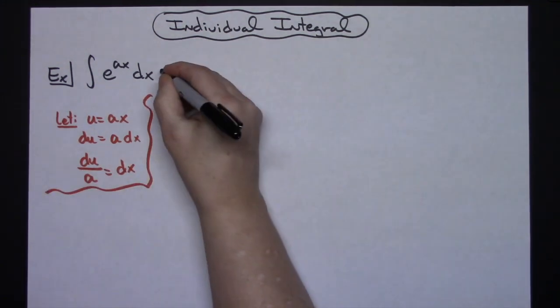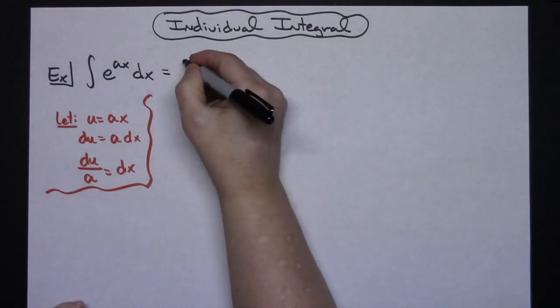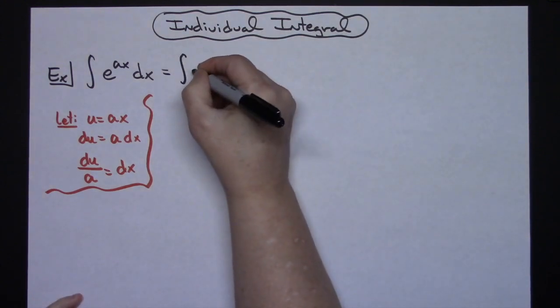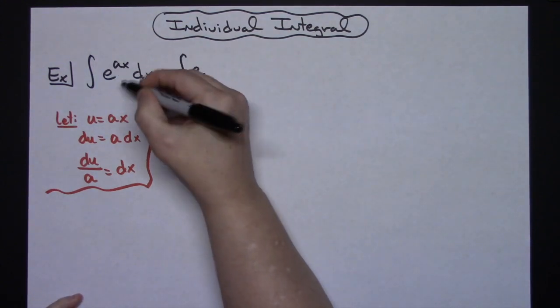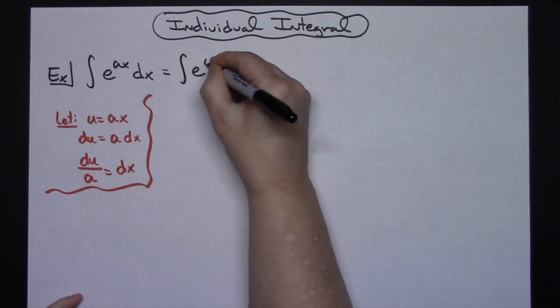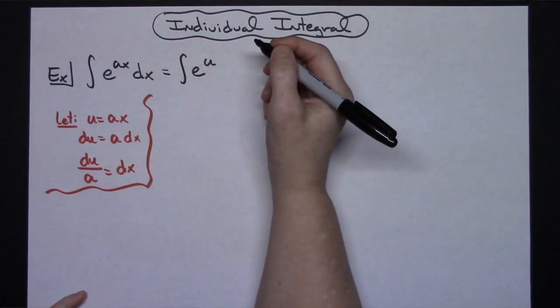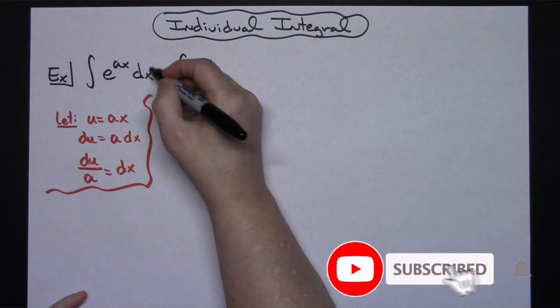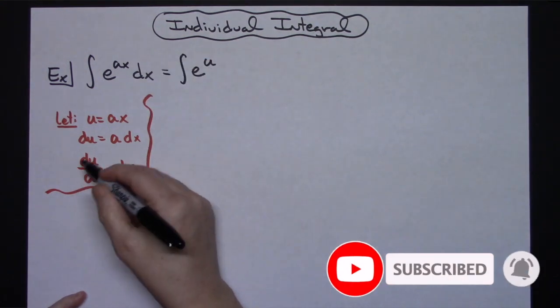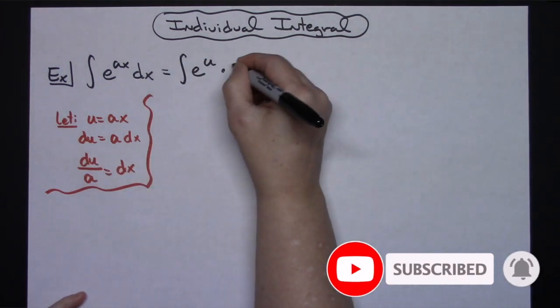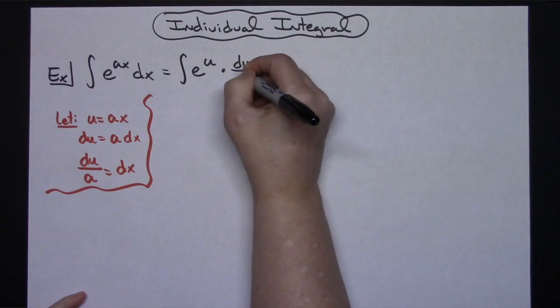I'm going to go back up to my original integral and I'm going to start substituting. I'm going to have the integral of e. I'm going to replace ax with my u because that's what I initially let u be. I'm going to replace dx with what that equals. So I will have times du over a.